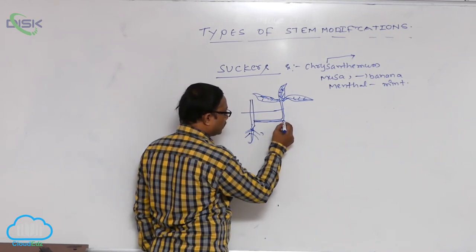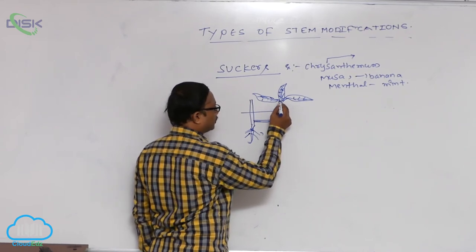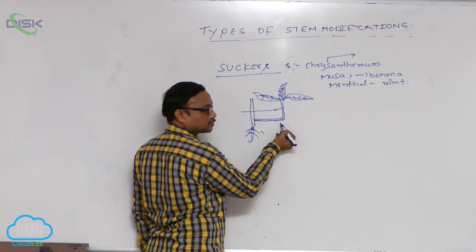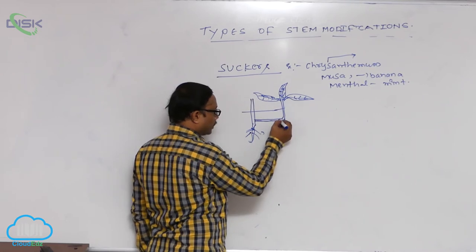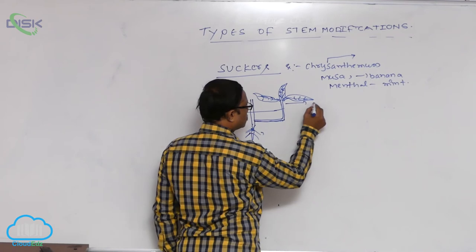Horizontally grows below the soil, again it grows, it means vertically upward direction producing leafy shoots. So this vertical growth of that leafy shoots is known as that SAKKAS.